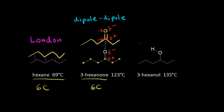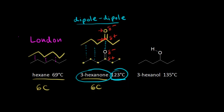Obviously, London dispersion forces would also be present. But dipole-dipole is a stronger intermolecular force compared to London dispersion forces. Therefore, the two molecules of 3-hexanone are attracted to each other more than the two molecules of hexane, so it takes more energy for these molecules to pull apart. That's why 3-hexanone has a much higher boiling point than hexane — because dipole-dipole interactions are a stronger intermolecular force compared to London dispersion forces.